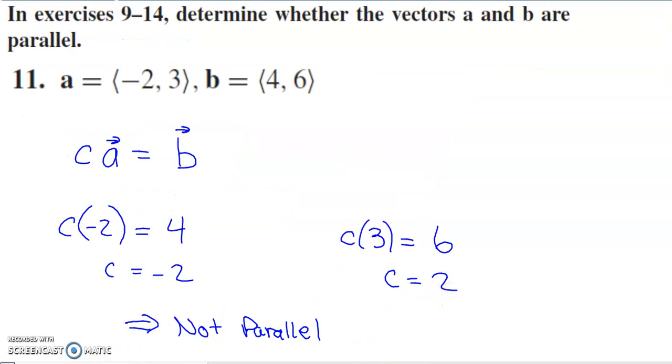In this problem, we're asked to determine whether the given vectors are parallel to each other. I'm going to test whether there's a scalar multiple that I can multiply vector a by to generate vector b. I'm assuming I can take a number, multiply vector a by that number, and generate vector b. For the x components, remember that when you multiply by a scalar, you multiply the original component by the scalar to generate the new x component.